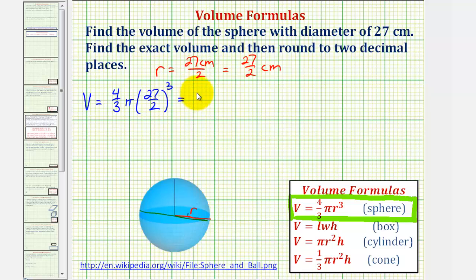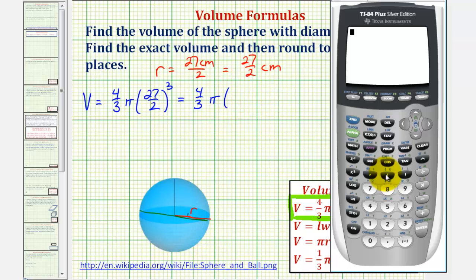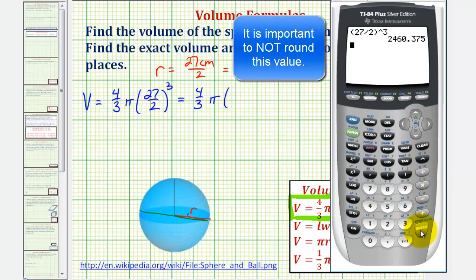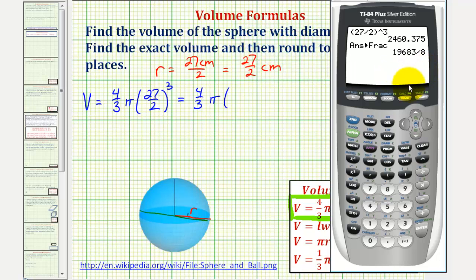Let's go ahead and show some work here. We'll have four-thirds times pi times 27 halves cubed. So in parentheses, we'll have 27 halves, closed parenthesis. And we'll cube this, so we'll press the exponent key or the caret, three, enter. We want this as a fraction, so we'll press math, enter, enter. So we have 19,683 divided by eight.